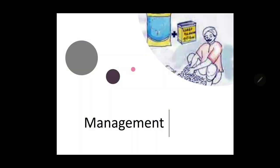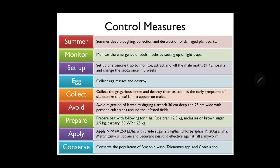Based on the life cycle, control measures include deep summer plowing and collection and destruction of damaged plant parts. All stages — egg, larvae, and pupa — should be collected and destroyed by burying them at least 12 cm deep into the soil.